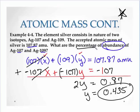Now that's its fraction abundance out of 1. It didn't ask for the fraction abundance, it asks for the percent. So I have to multiply by 100. So silver 109 has an abundance of 43.5%.